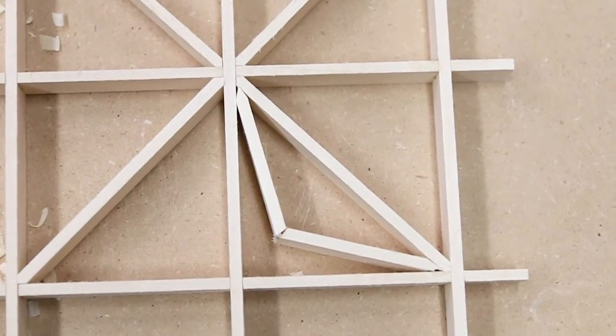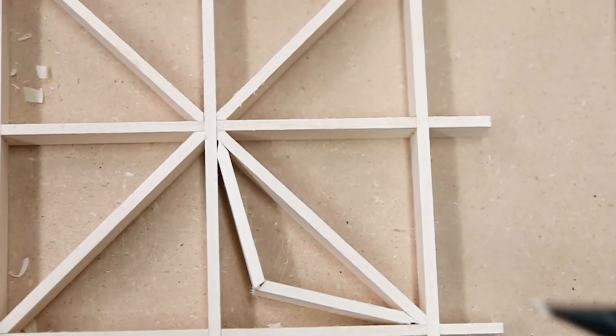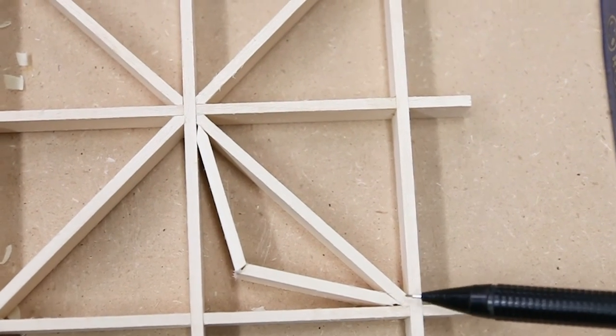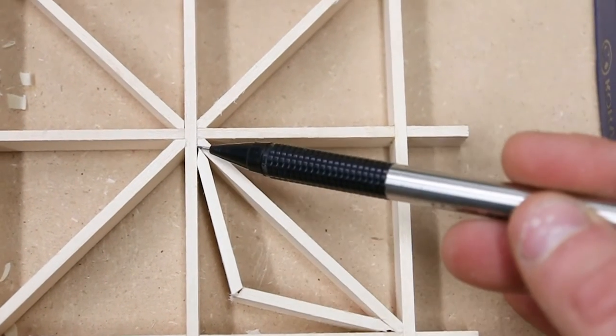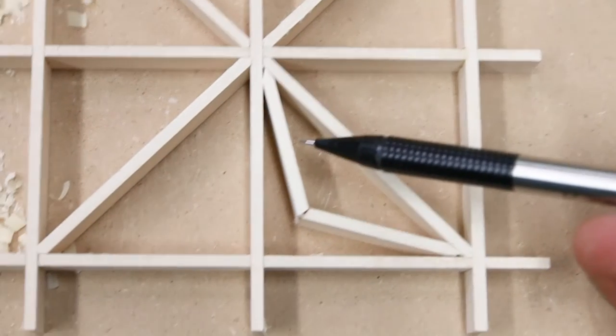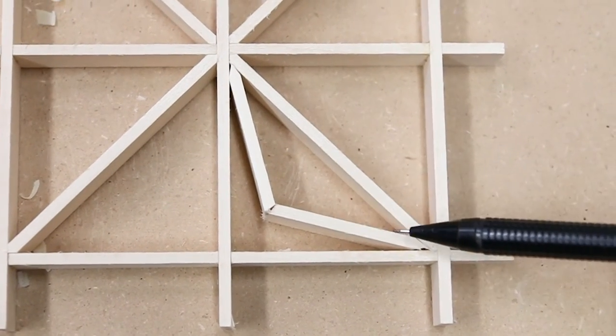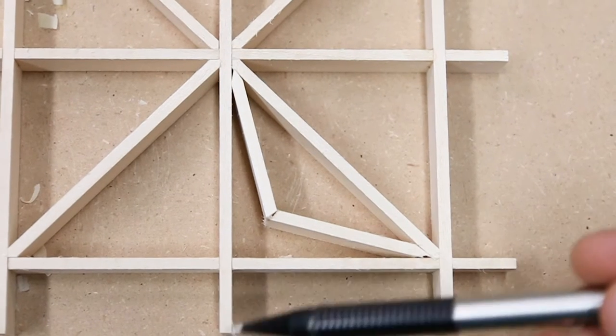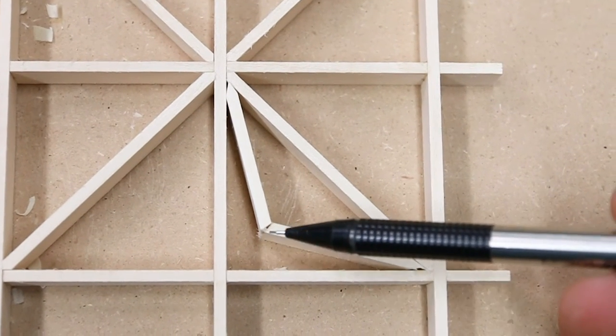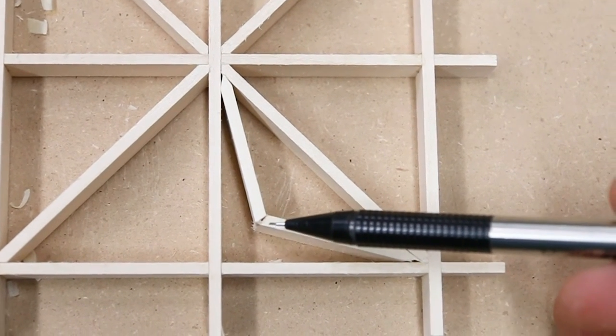I want to bring you in close for just a second and show you what I'm seeing. You see the gaps here, here, and here. That means these two pieces are too long. So what we need to do is we need to reset the jig just to pair a little bit more off of each edge.